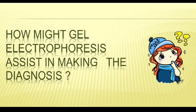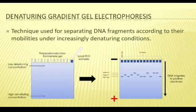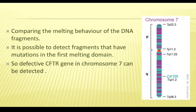How might gel electrophoresis assist in making the diagnosis? In this case, we use denaturing gradient gel electrophoresis (DGGE). This is a technique used for separating DNA fragments according to their mobilities under increasingly denaturing conditions. With the help of this, we can compare the melting behavior of DNA fragments and detect fragments that have mutations. This helps us detect the defective CFTR gene on chromosome 7.